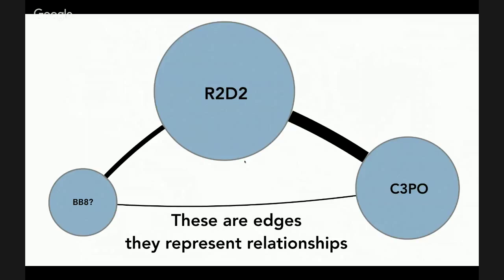The edges are these lines between the nodes, and I use the vague term 'relationships' because the relationships between nodes can be quite various. If we're thinking about a movie like Star Wars, we might decide that an edge is created every time two characters speak to one another, or every time two characters appear in the same scene. In Moretti's Graphs, Maps, Trees, an edge represents two characters speaking to one another, but other versions use co-presence on stage.